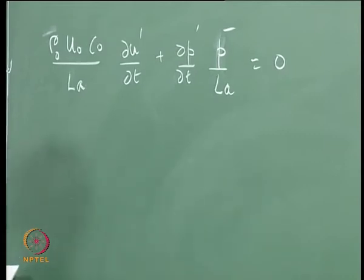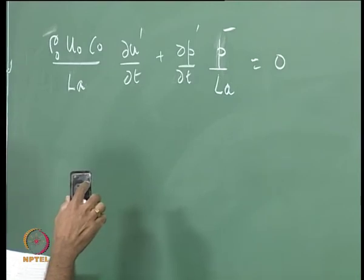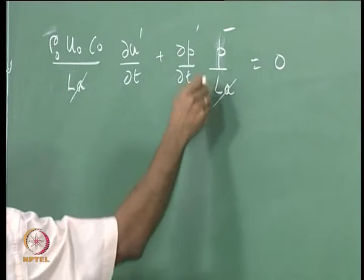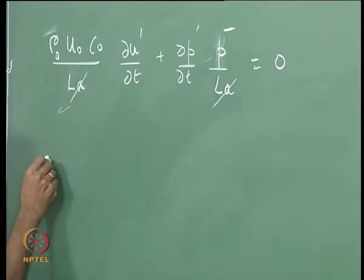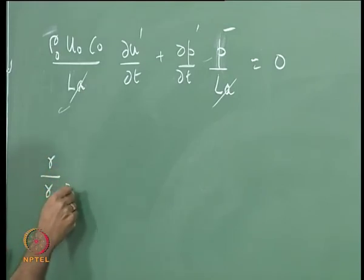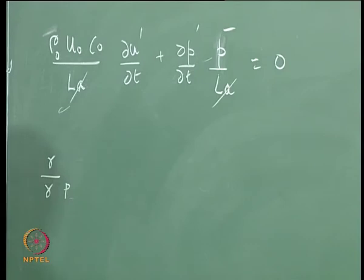If I divide throughout by P bar, I can remove L_a and bring P bar here. I can multiply both top and bottom by gamma. I think I should use P naught also here.